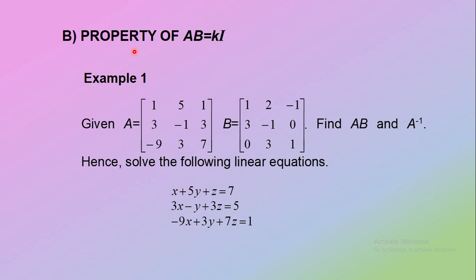You have learned how to solve systems of linear equations by using inverse matrices from the adjoint method. Now we are going to discuss using inverse matrices obtained from the property AB equals KI. Look at example 1. Given matrix A and matrix B, find the matrix AB and A inverse, and solve the following linear equations.